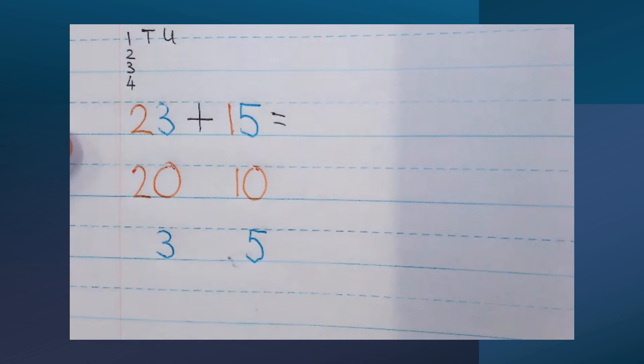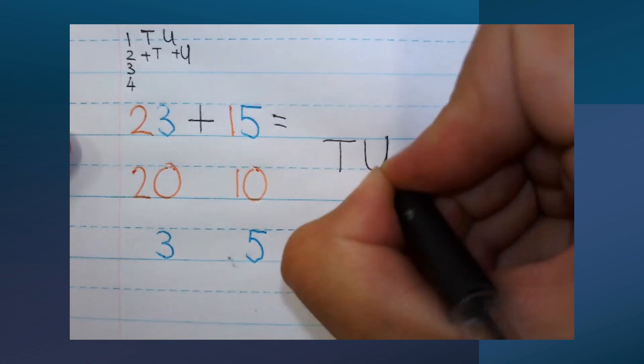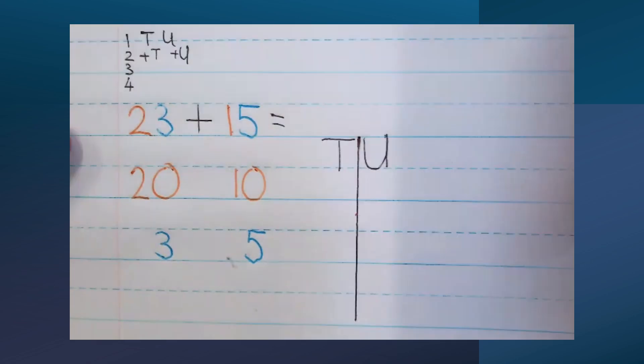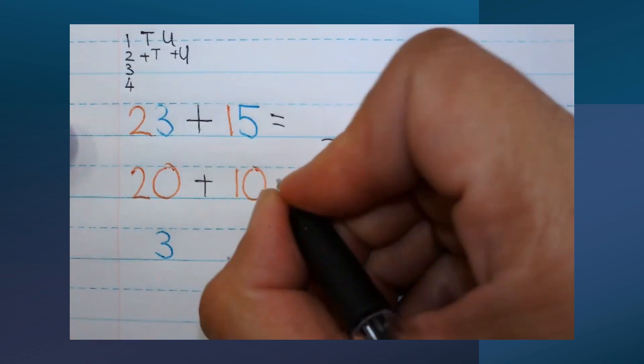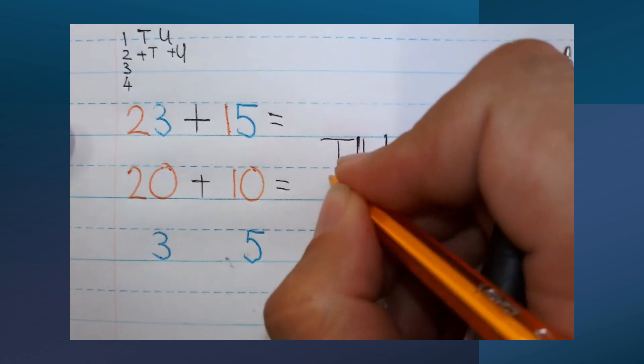My second step is to add my tens together and add my units together. I'm going to put them into columns of tens and units on this side. 20 plus 10 will give me 30. The 3 goes into the tens column because it's a 10, and the zero into the units column.